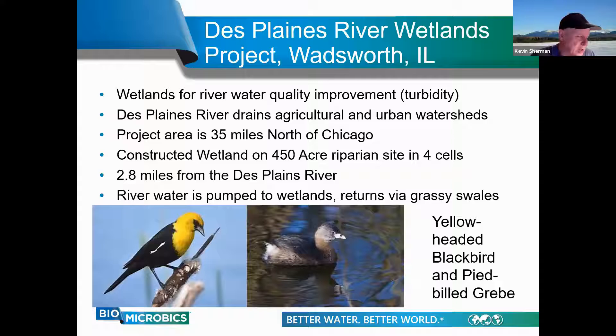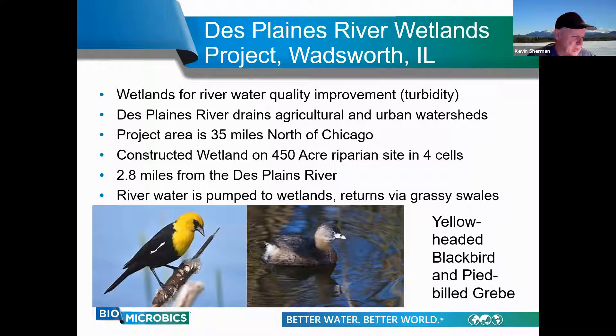The next case study is in Wadsworth, Illinois, which uses constructed wetlands to cleanse river water. The Plaines River runs through southern Wisconsin and through Illinois, and the project is located 35 miles north of Chicago. The main concern is high turbidity levels in the river water. The constructed wetland is nearly two miles away from the river itself — river water is pumped to the highest elevations of the constructed wetland cells and flows gradually back to the river under gravity. Wetland vegetation responded favorably, and two bird species endangered in Illinois are thriving under these new conditions.